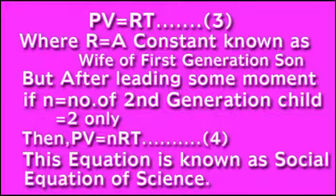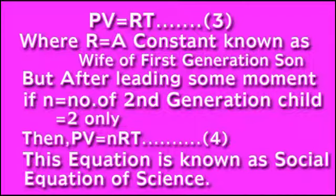But after leading some time, if N equals the number of second generation children, equal to two only, then PV equals nRT. This equation is known as the social equation of science.